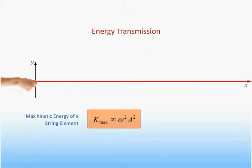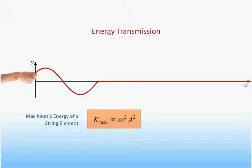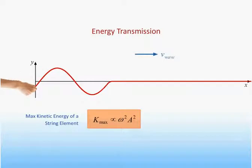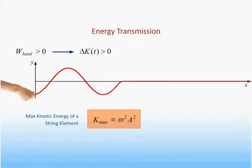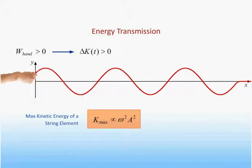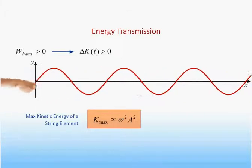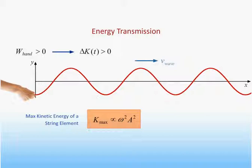Here you see a hand pumping the end of the string from side to side. As the hand moves, it exerts a force on the string in the direction of its motion. Therefore, the hand always does positive work on the string, causing the kinetic energy of the string to increase. We see this increase of energy since more and more of the string moves as the wave propagates down the string. As the wave moves down the string with a speed v, so does the energy.